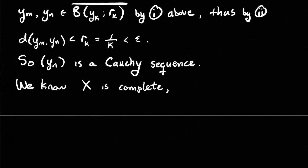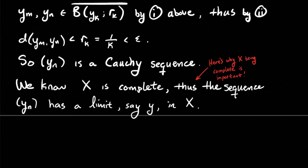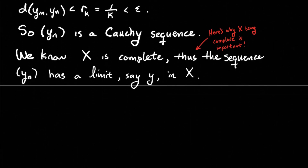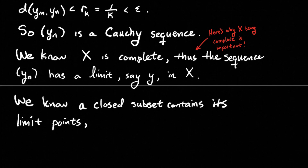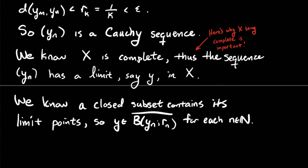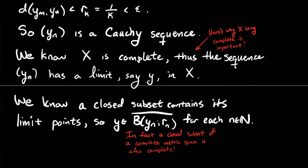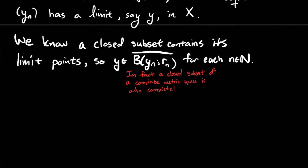Since X is a complete metric space, the Cauchy sequence Y_n has a limit — call it Y — and that limit Y is an element of the set X, so it lives in our metric space. A closed subset contains its limit points, so Y must be in the closure of each ball centered at Y_n of radius R_n. Alternatively, since the closure of each ball is a closed subset of a complete metric space, it is also complete, which gives us the same result.